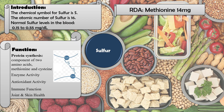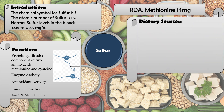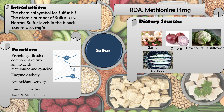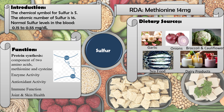The RDA for sulfur is expressed as the RDA for methionine, which is 14 mg, since sulfur is taken indirectly as a component of the amino acids methionine and cysteine. Dietary sources include garlic, onions, broccoli, cauliflower, seafood, and dairy products.